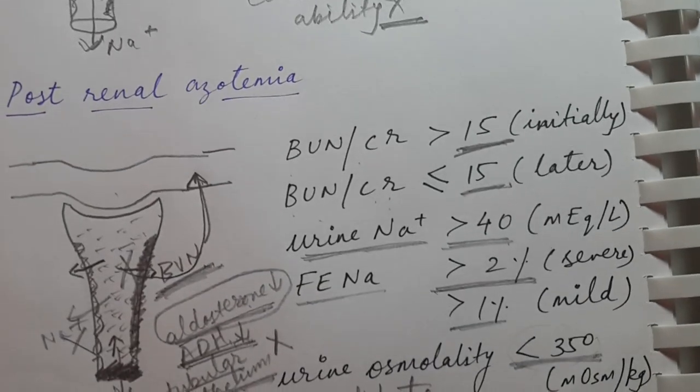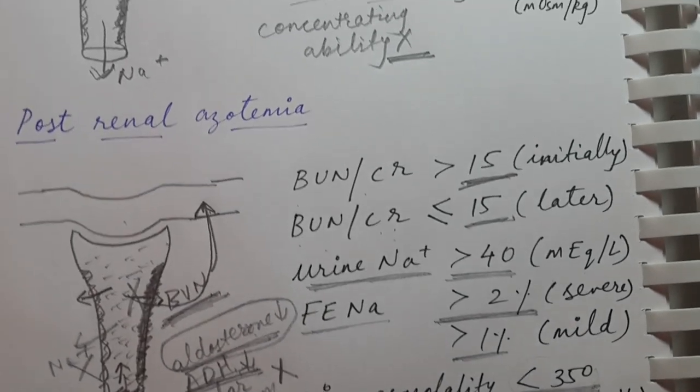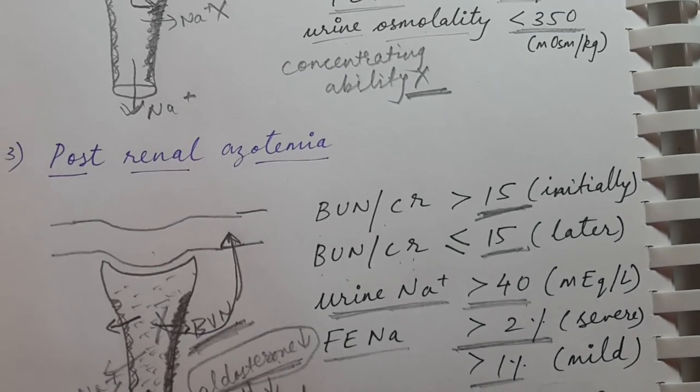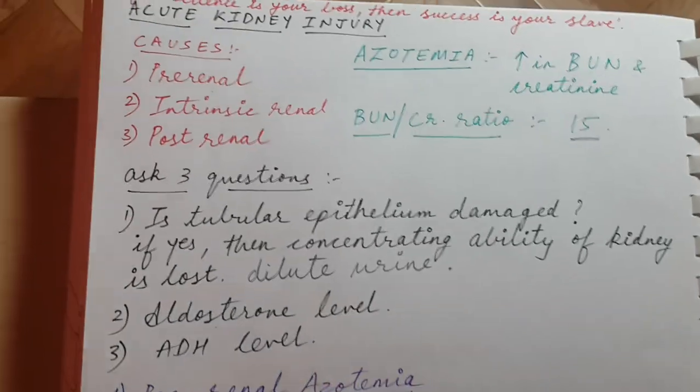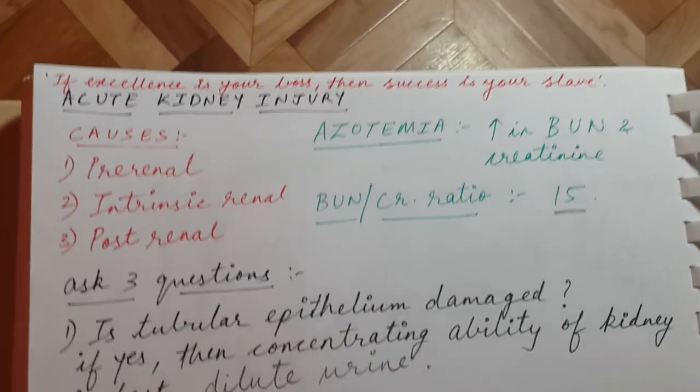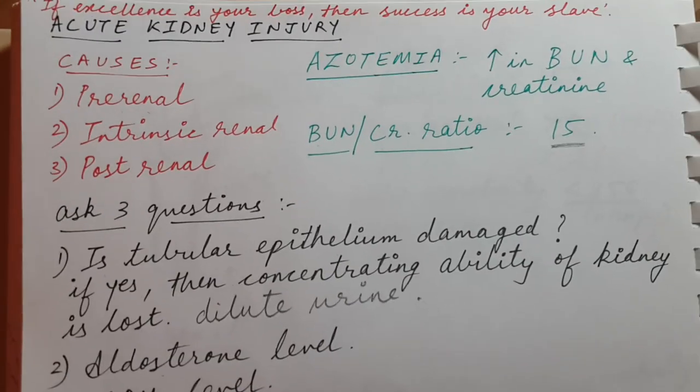Hopefully, by remembering all these points, it will be easy to understand acute kidney injury and its different causes.